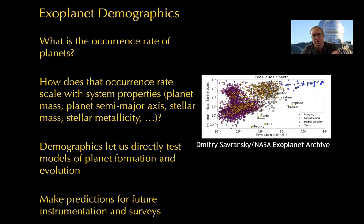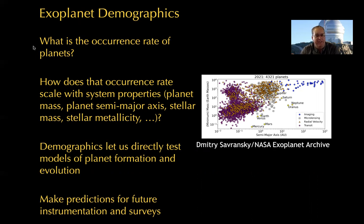So what is exoplanet demographics? I answer this with two related questions. One thing that exoplanet demographics gets at is trying to figure out the occurrence rate of planets — how many planets do you have per star? And the related question is: how does that occurrence rate change with properties of the star and properties of the planet?